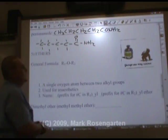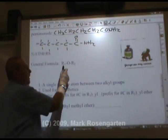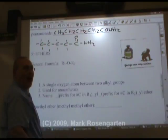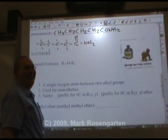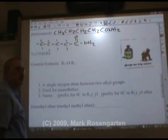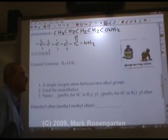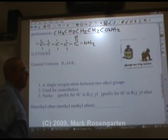Ethers contain an oxygen with carbons on either side — it's a single oxygen between two alkyl groups. Ethers are used for anesthetics, although ether is no longer used on humans. They used to use this on humans to knock them out.